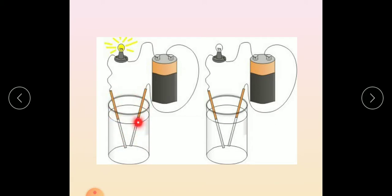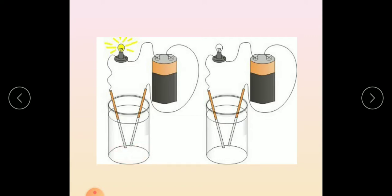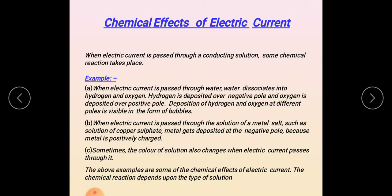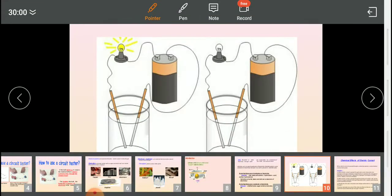We can connect the circuit wire directly to test a liquid, but the two wire ends should not touch each other — they must be one centimeter apart in the liquid. If they touch, the bulb will glow regardless, and we won't be able to tell whether the liquid conducts electricity. Tomorrow I will come with the next topic. Thank you.